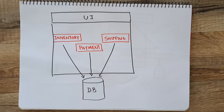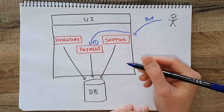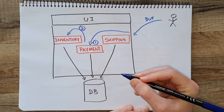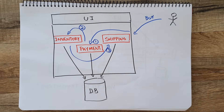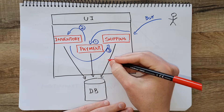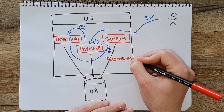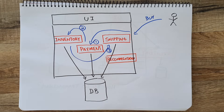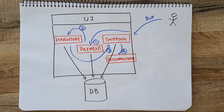For example, when the user buys a product, you need to first confirm the payment, then maybe deduct the product from the inventory, then prepare the shipping, and then probably update the user's order history and maybe their preferences, because you now know that this user has bought this item and maybe they would like to buy other things.